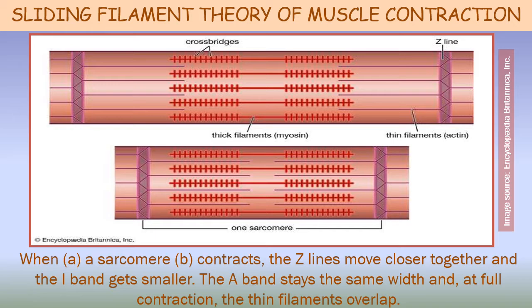In the figure, number A shows a sarcomere in its relaxed position and number B shows a sarcomere in a contracted position, where the Z lines move closer together and the I band gets smaller, the A band stays the same width, and at full contraction the thin filaments overlap the thick filaments. Therefore, the sliding filament theory proposes that changes in overall fiber length are directly associated with changes in the overlap between the two sets of filaments — that is, the thin filaments telescope into the area of thick filaments. This interdiscitation accounts for the change in the length of the muscle fiber.